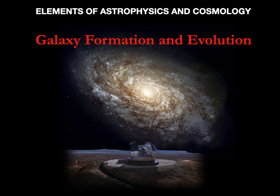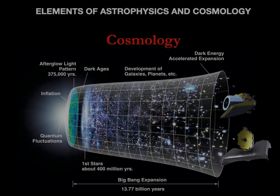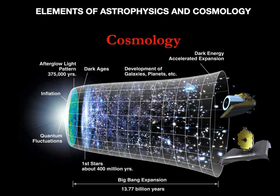Then we will study the formation and evolution of galaxies, from the large spirals such as the Milky Way and Andromeda, to remote irregular galaxies which were formed about 13 billion years ago, at the beginning of the history of the cosmos. Among the galaxies, a particular emphasis will be given to the so-called active galactic nuclei, where supermassive black holes weighing millions to billions of solar masses are responsible for phenomena among the most energetic and spectacular of the entire universe. Finally, we will see what modern cosmological theories tell us about the very nature of our own universe, trying to answer questions such as: how was the universe born? How has it evolved? What is its final destiny?